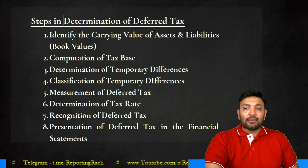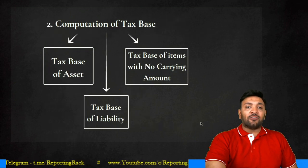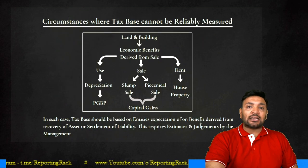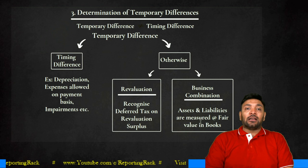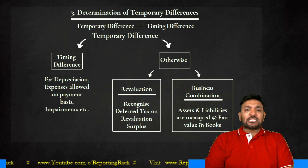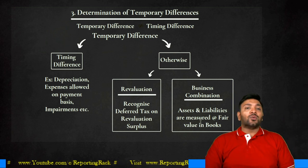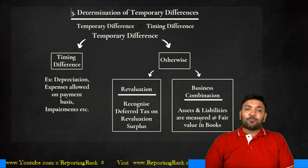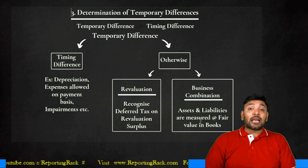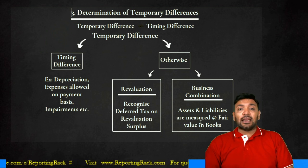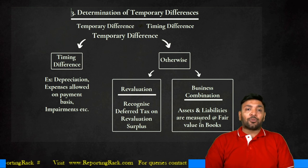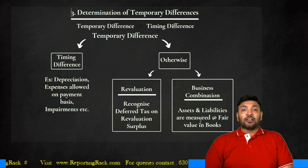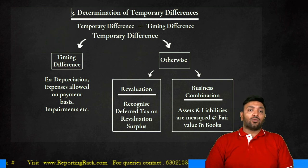Step 3 is about determining temporary differences by comparing step 1 and step 2. What is a temporary difference and how is it different from a timing difference? Temporary difference computation is simple: step 1 minus step 2 gives temporary differences. Temporary differences are different from timing differences mentioned under AS 22. Ind AS 12 only talks about temporary differences. Temporary difference includes timing differences, but is a larger concept.